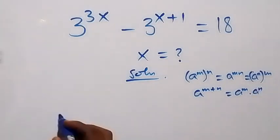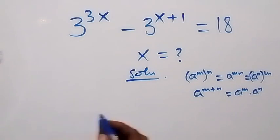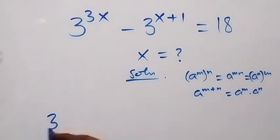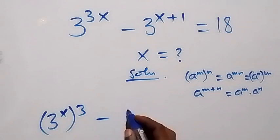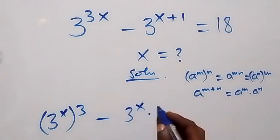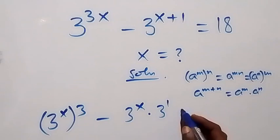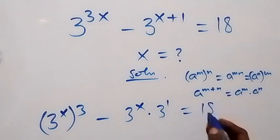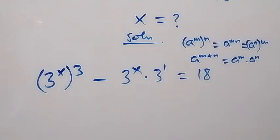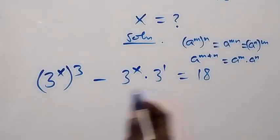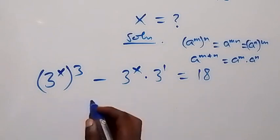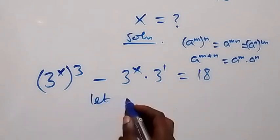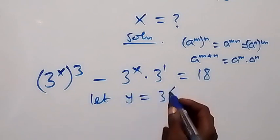From what we have here, this should be written as 3 raised to power x, then raised to power 3, then minus — here we have 3 raised to power x times 3 raised to power 1 equals 18. Then from here, we have 3 raised to power x common, so we can say: let y be equal to 3 raised to power x.